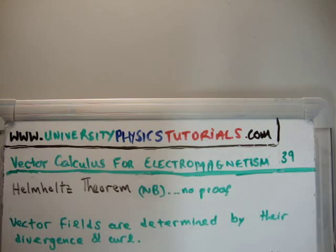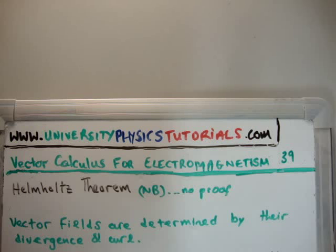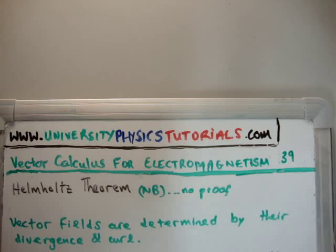This theorem is vital for electromagnetism — without it you cannot study electromagnetism, full stop. Electromagnetism talks about scalar and vector potentials; for example, the scalar potential for the electric field is called the voltage. We cannot talk about these unless we talk about the Helmholtz theorem, so I'm going to talk about the results of the theorem rather than prove it. You can look up a proof elsewhere, but for now we'll just accept that it is correct.